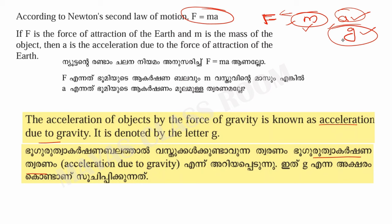It is 'g', and we represent it as small g. That is what we call acceleration due to gravity — the acceleration of objects caused by the force of gravity. Acceleration due to gravity is denoted by small letter g.